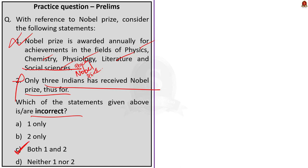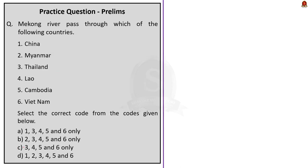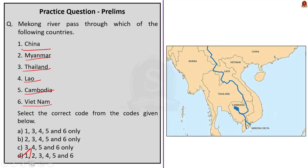The second question asks through which countries the Mekong River passes: China, Myanmar, Thailand, Laos, Cambodia and Vietnam. The answer is option D — all six countries, because the Mekong River passes through all of them.